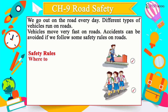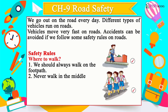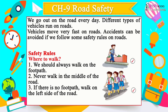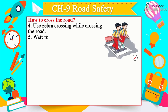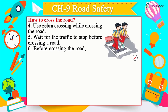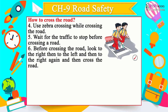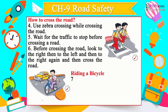Safety Rules — Where to Walk: Always walk on the footpath; never walk in the middle of the road. If there is no footpath, walk on the left side of the road. How to Cross the Road: Use zebra crossing; wait for traffic to stop before crossing; look right, then left, then right again before crossing.